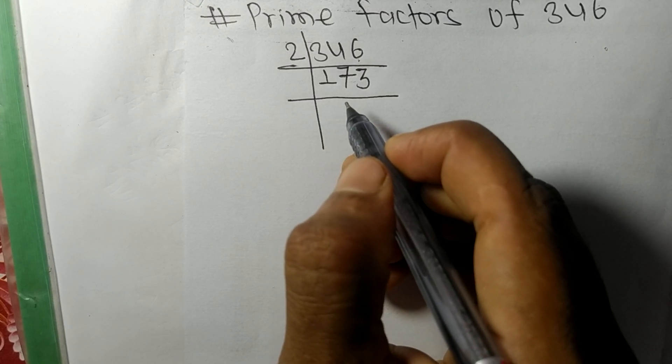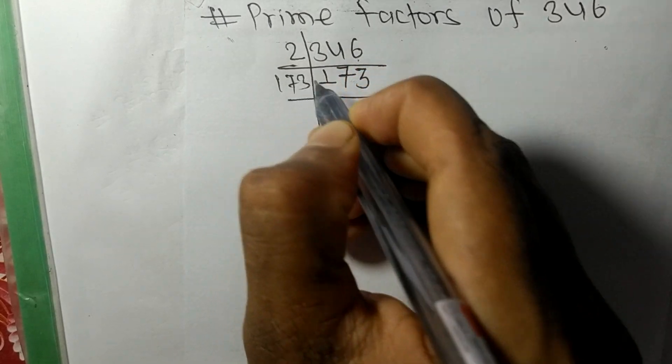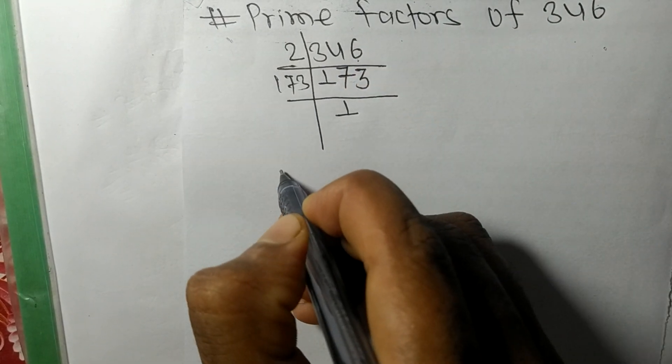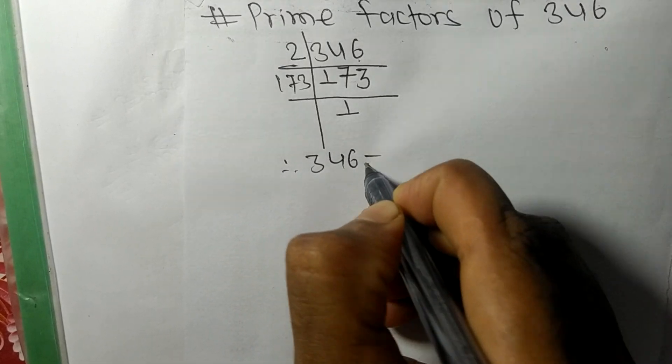173 is our prime number, so it is divisible by 173 itself and we get here 1.